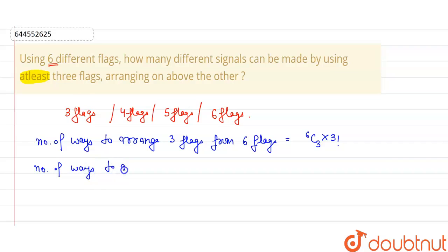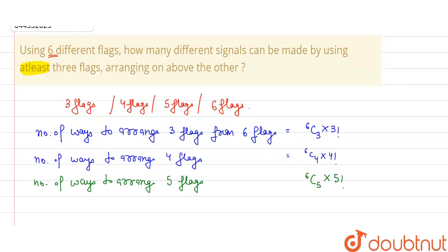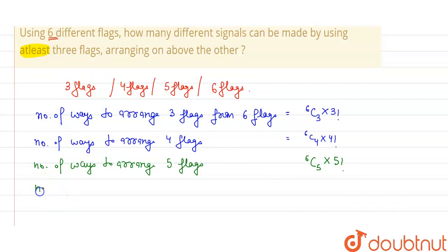For Case 3, the number of ways to arrange five flags is 6C5 into 5 factorial. For Case 4, the number of ways to arrange six flags is equal to 6C6 into 6 factorial.